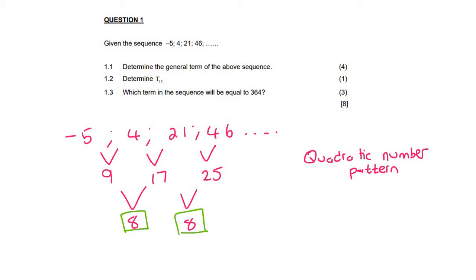So we should know that the general formula for a quadratic is Tn equals An squared plus Bn plus C. Now there are different ways of doing this, but the method that I like to use is I always look at these three numbers here.